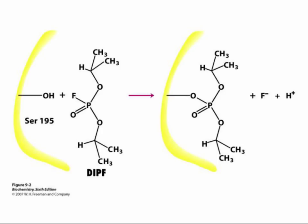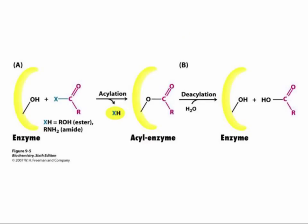Chymotrypsin is a serine protease. Its active site has a uniquely active serine hydroxyl group, serine 195, that can lose a proton and become anionic during catalysis. That property makes the active site serine residue highly susceptible to reaction with the reagent DIFP, producing a covalent product and inactivating the enzyme. This figure gives a generalized scheme for enzymatic hydrolysis of amides or esters involving active site serine residues. There's an acylation phase in which the alcohol or amine is released and the active site serine is acylated, followed by a deacylation phase in which the carboxylic acid component is released. The intermediate in this process is an acyl enzyme intermediate.